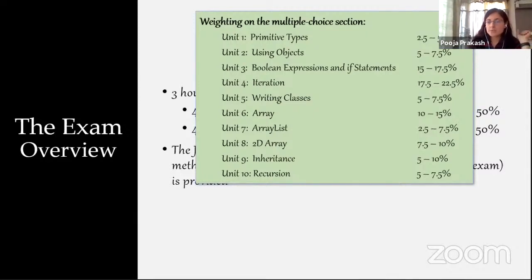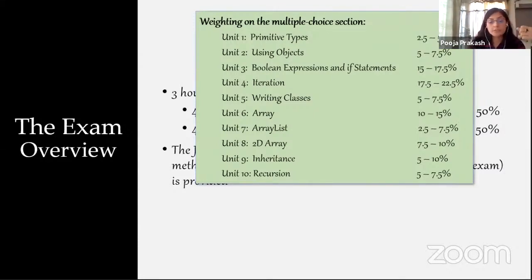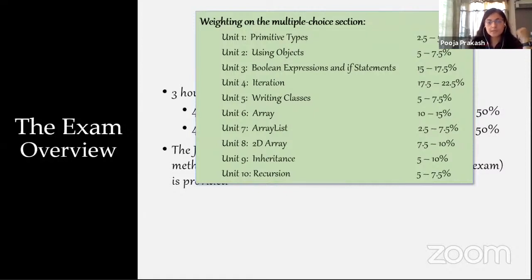Classes cover 5 to 7.5 percent. Arrays — covered in Units 6, 7, and 8 — carry 10 to 15 percent, 2.5 to 7.5 percent, and 7.5 to 10 percent respectively. Arrays require a lot of effort and time. Inheritance has 5 to 10 percent coverage, and Unit 10 recursion is 5 to 7.5 percent. That covers the MCQ section.